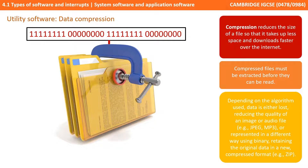Compression utilities reduce the size of a file so it takes up less disk space and is quicker to download over the internet. Compressed files must be extracted before they can be read. For example, a video on YouTube needs to be compressed so you can watch it in real time — there would just be too much data, especially if the video was high quality. Depending on the algorithm used, data is either lost during compression, which reduces the quality of an image or sound — for example, JPEG — or the data is represented in a different way using binary, retaining the original data in a new compressed format, for example a zip file.